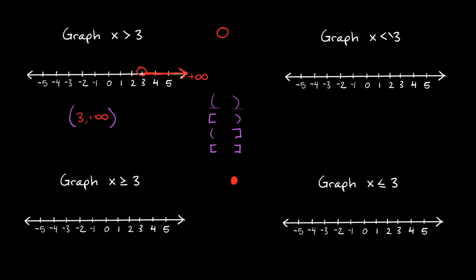Let's try another example. This one says graph x is less than 3. Again, this is just a less than sign, so I'm going to use an open circle at 3. We want to graph all the numbers that are smaller than 3, so we draw a line and arrow to the left — that's headed in the negative infinity direction. In interval notation: negative infinity comma 3, with a parenthesis around the negative infinity since it's infinity, and a parenthesis around the 3 since it's an open circle. So the answer is (-∞, 3).